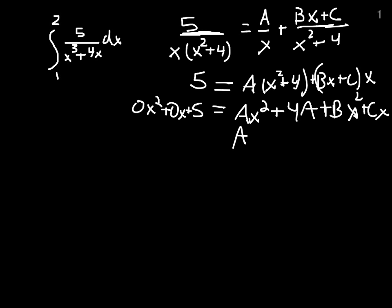Matching up coefficients, we see that on the right-hand side, the coefficient of x squared is a plus b. On the right-hand side, the coefficient on x is c. And on the right-hand side, the constant term is 4a.